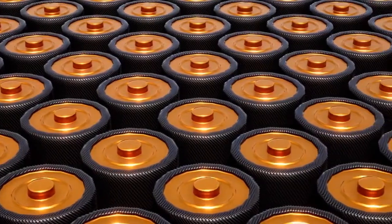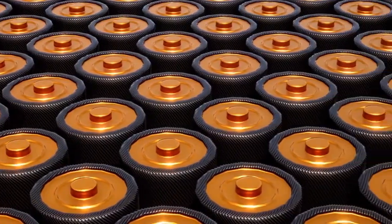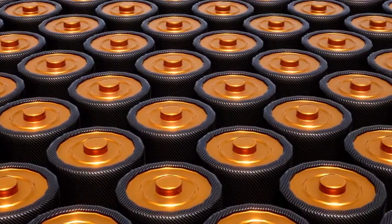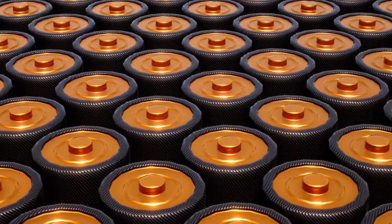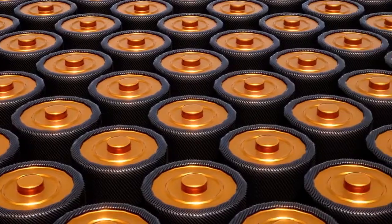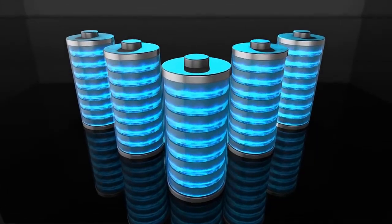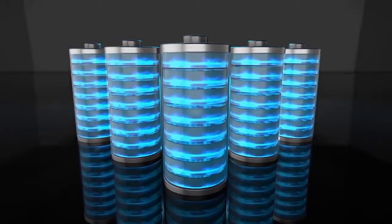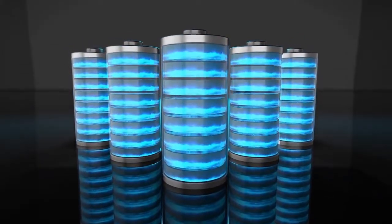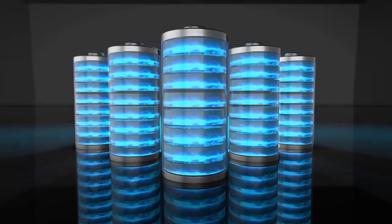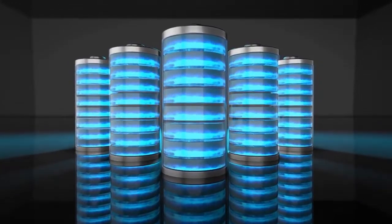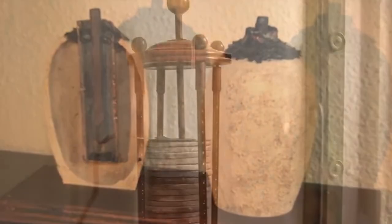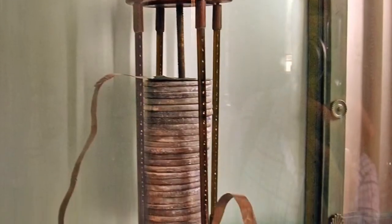The journey through the history of battery manufacturing reveals a remarkable tale of human ingenuity, innovation, and perseverance. From the ancient experiments with electrochemical cells to the sophisticated production processes of modern lithium-ion batteries, each era has contributed to shaping the evolution of battery technology. The earliest attempts at harnessing electricity, exemplified by artifacts like the Baghdad battery and the Voltaic Pile, laid the foundation for the exploration of electrochemistry.